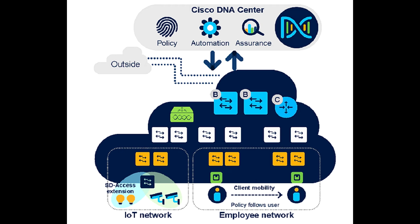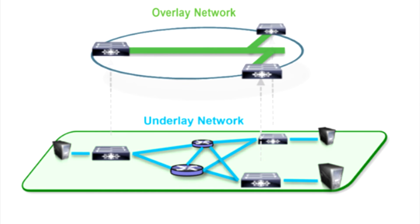The second component is network fabrics. These fabrics enable consistent user experiences on any device and from any location without compromising the security of your network. Using the policies created in DNAC, the single-network fabric provides consistency across your network and for your users.